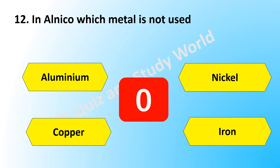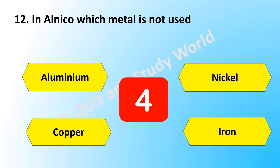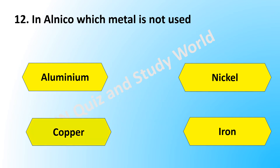In alnico, which metal is not used? Is it aluminium, nickel, copper, or iron? The answer is copper.